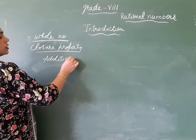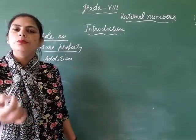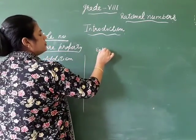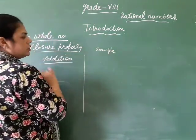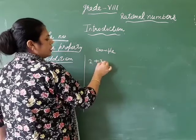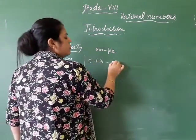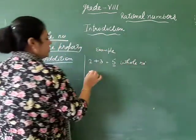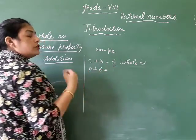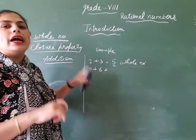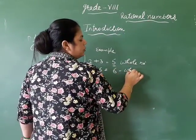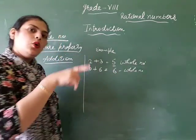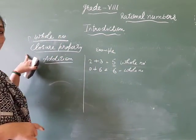When you add whole numbers, your sum is also a whole number. Let's check with an example: 2 plus 3 equals 5. Is 5 a whole number? Yes. Another example: 0 plus 6 equals 6. Zero is a whole number, 6 is a whole number, and their sum 6 is also a whole number. That means when we add whole numbers, the sum is also a whole number. So whole numbers are closed under addition.